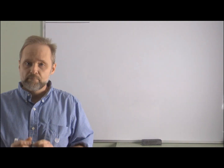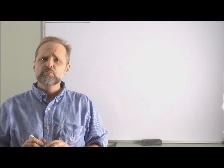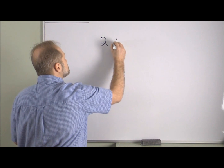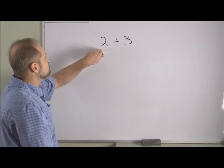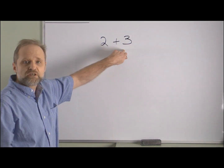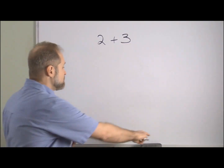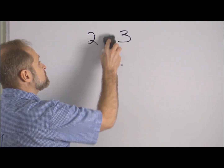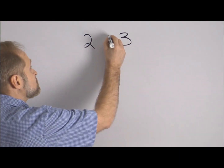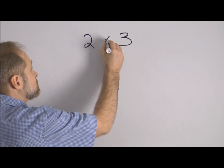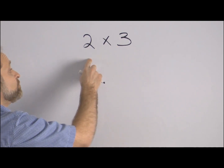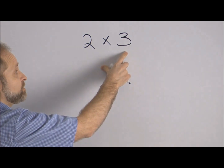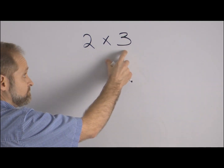First, some basics. We all are familiar with this type of problem — we all know that 2 plus 3 is 5. However, if we change this plus sign so it looks like an X, this is now read as 2 multiplied by 3, or 2 times 3.